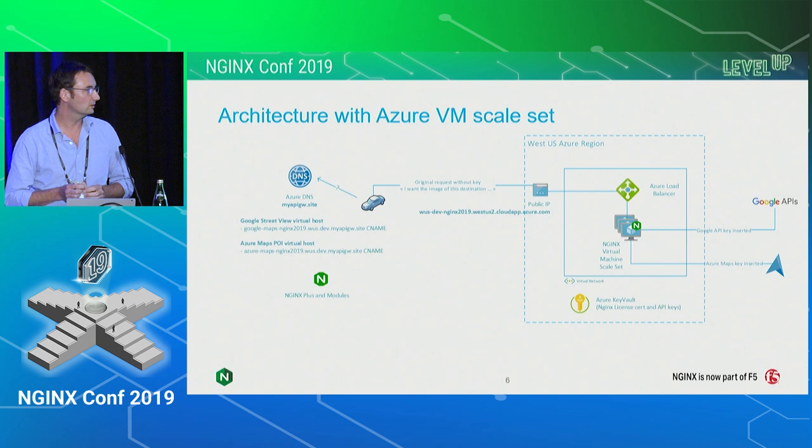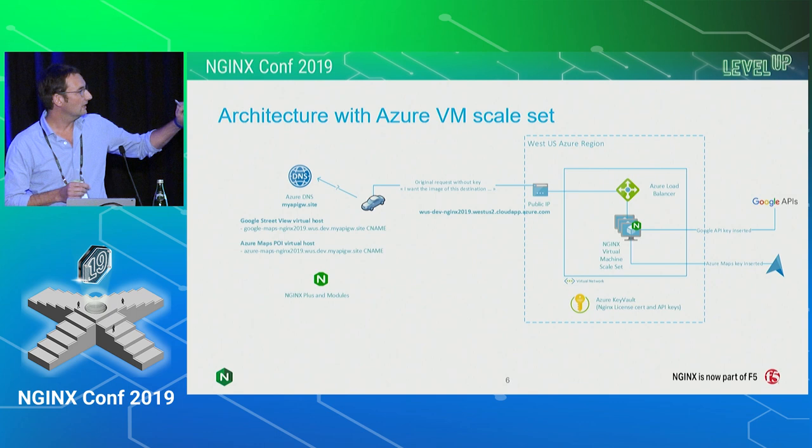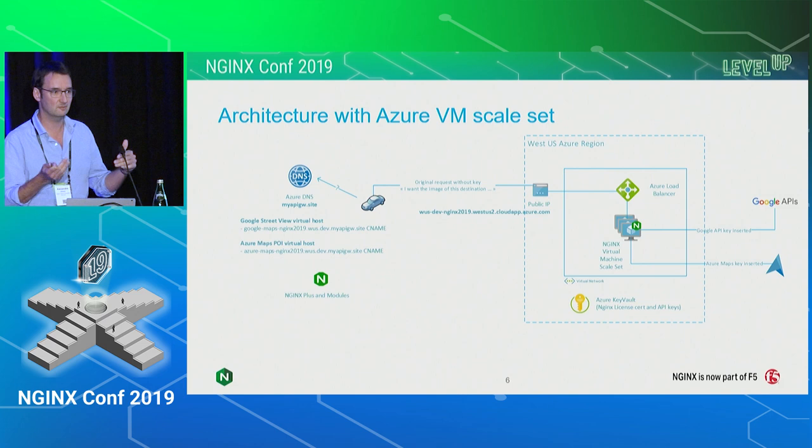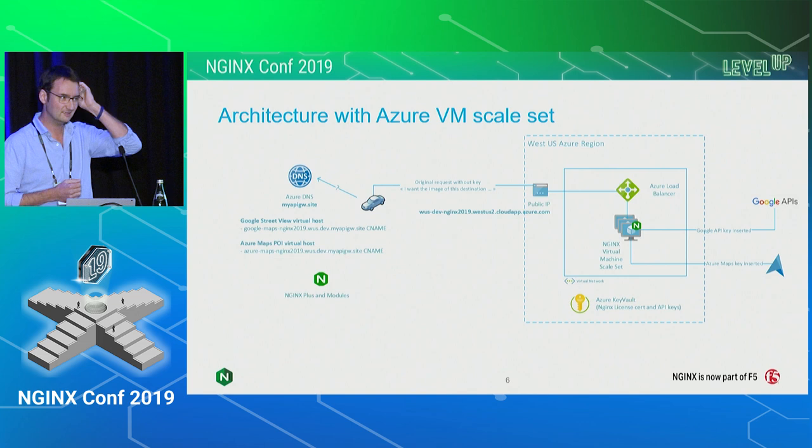At the end of the day we will target the Google APIs and Azure Maps, which is a brand new service that can give you local services based on your location — quite similar to Google. Everything is deployed in the West US region, which I call 'wus' in my scripts. If you need to move to France Central, you use 'frc' and just update the variables.